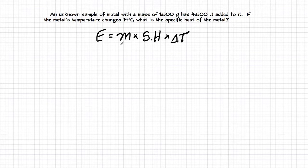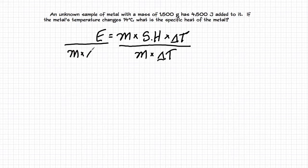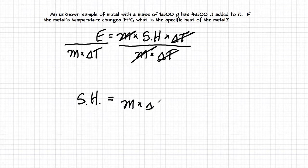So what I'm going to need to do is divide both sides by mass times the change in temperature. Mass cancels and delta T cancels. And I'm left with the specific heat is going to be equal to. Downstairs I've got the mass times the change in temperature. And upstairs I have the energy. So all I need to do now is go ahead and plug in my numbers.